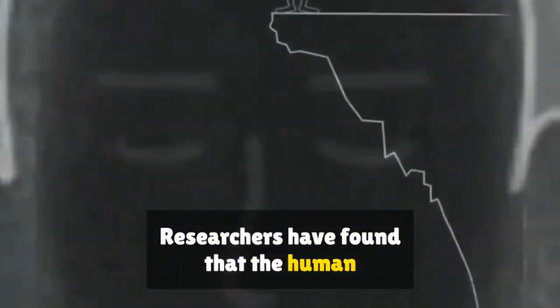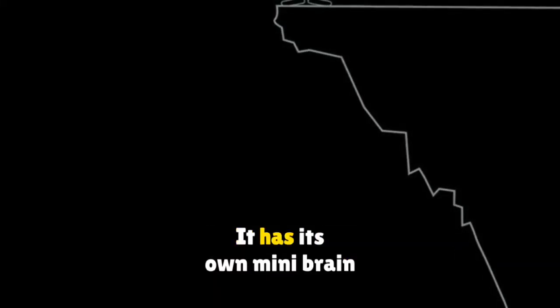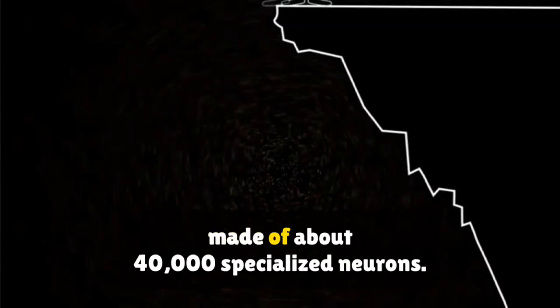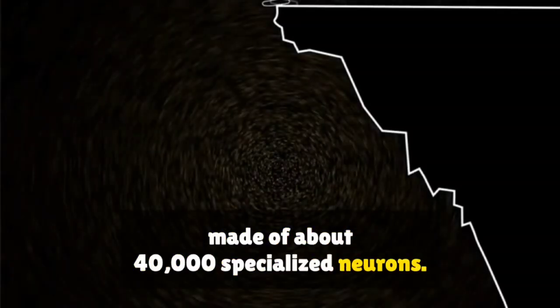Researchers have found that the human heart isn't just a pump. It has its own mini-brain, made of about 40,000 specialized neurons.